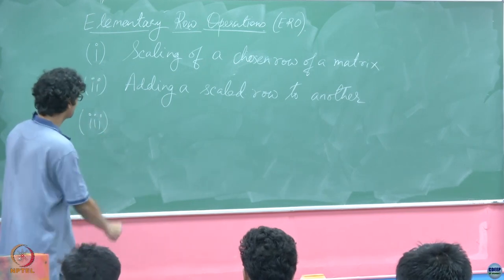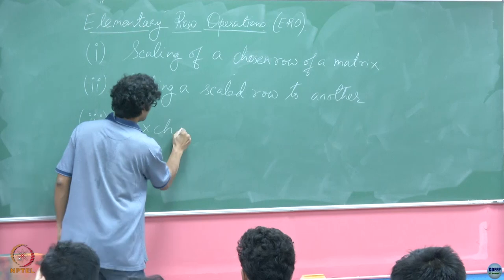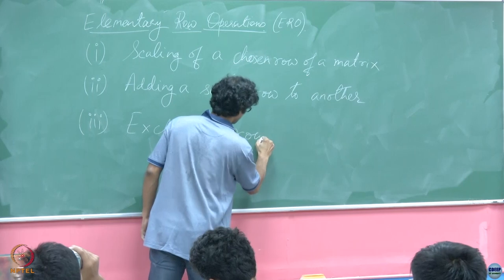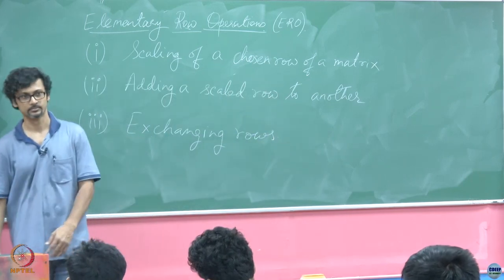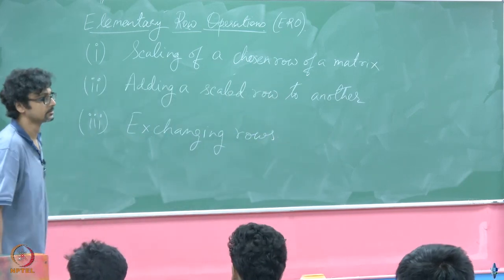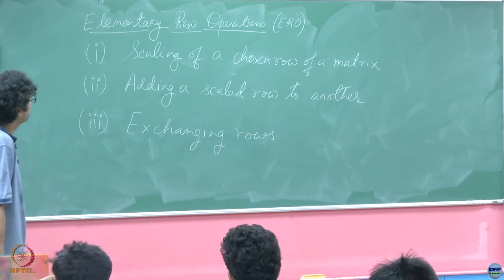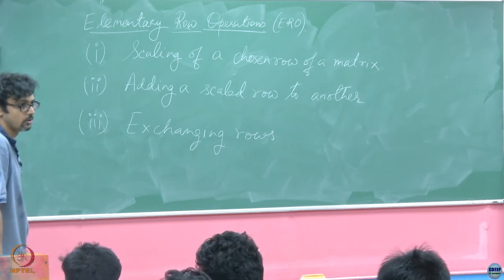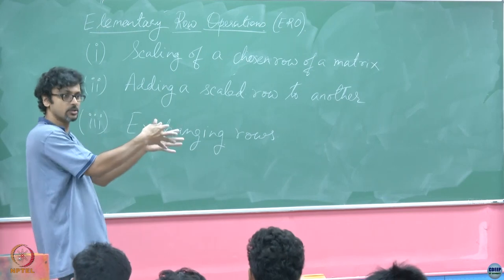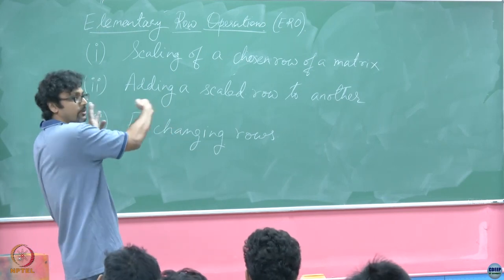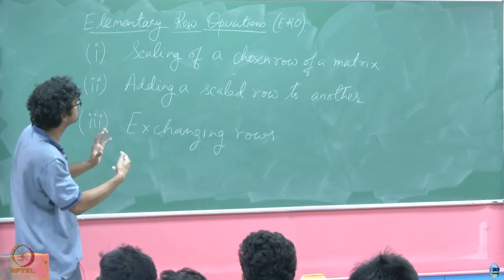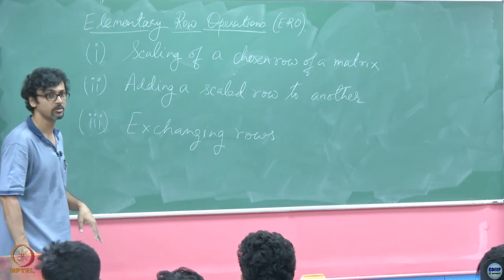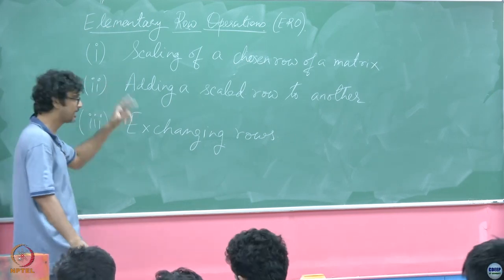The second: adding a scaled row to another. So, you have one equation and a second equation, to the second equation you add say 7 times the first equation. Obviously it is a non-trivial scaling that goes without saying. And a third: exchanging rows.